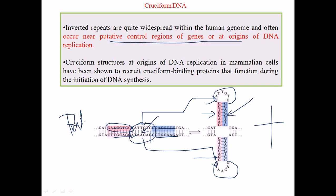If we find cruciform DNA at the beginning of DNA replication, it will recruit proteins called cruciform binding proteins. These proteins bind to the cruciform DNA and help the DNA to be replicated properly. That is the function of cruciform DNA.